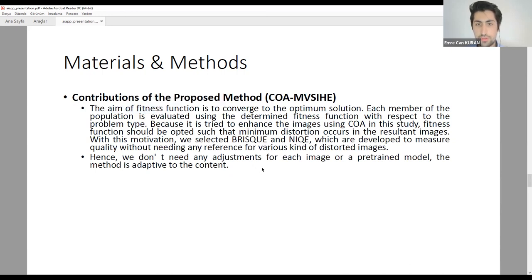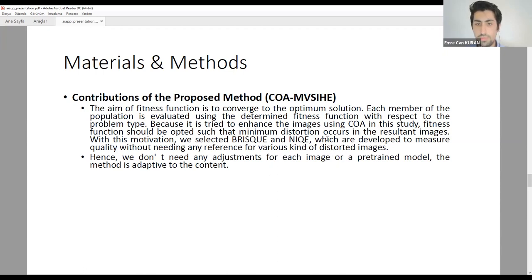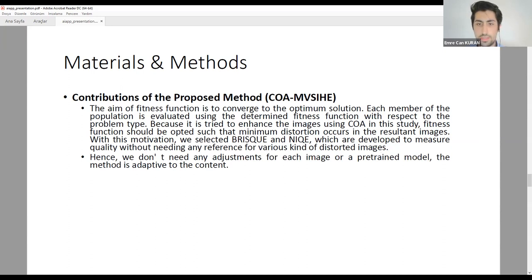The aim of the fitness function is to converge to the optimum solution. Each member of the population is evaluated using the fitness function with respect to the problem type. Since we are enhancing the image using CoA, the fitness function is designed such that minimum distortion occurs in the resultant image. We selected BRISQUE and NIQE metrics where a lower score means better quality, so we minimize this using CoA. These metrics measure quality without needing any reference for various types of distorted images, so no adjustments or pre-trained models are needed for each image.